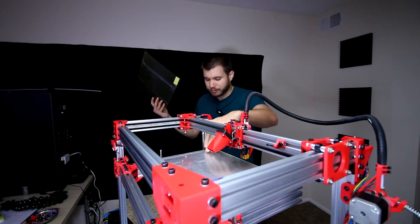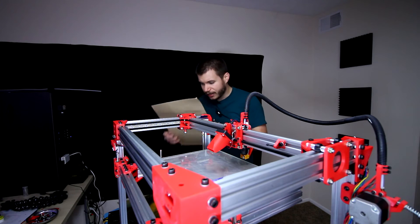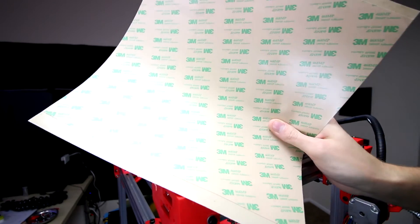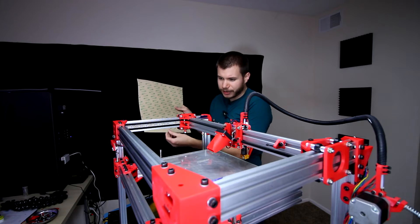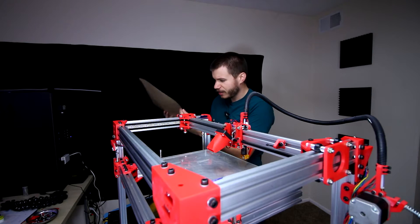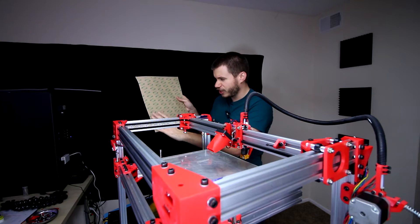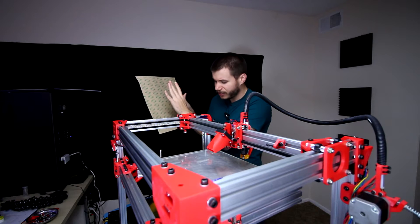The way we're going to do it is with an adhesive sheet. This is 3M 468 MP, a high temperature resistant adhesive sheet. It comes in one single sheet and you can cut it to whatever size you need.